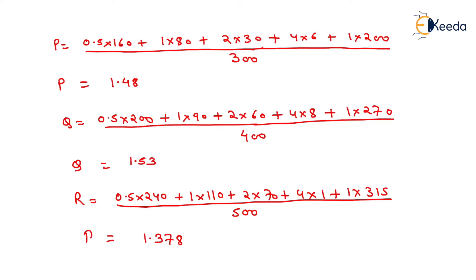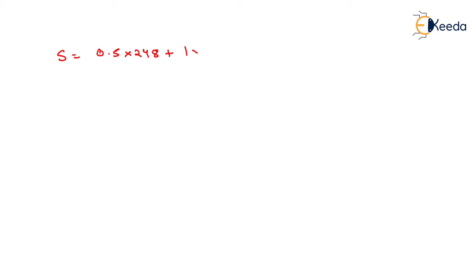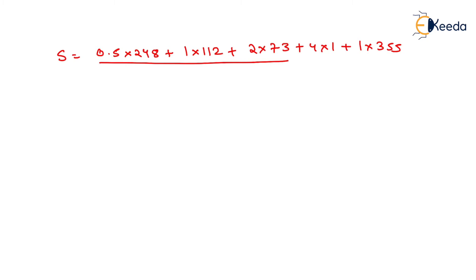Similarly, we can determine the utility value for road S, which will be equal to: 0.5 × 248 + 1 × 112 + 2 × 73 + 4 × 1 + 1 × 355, divided by the length of road S which is 500 km. After solving this, we get the utility value of road S as 1.482.